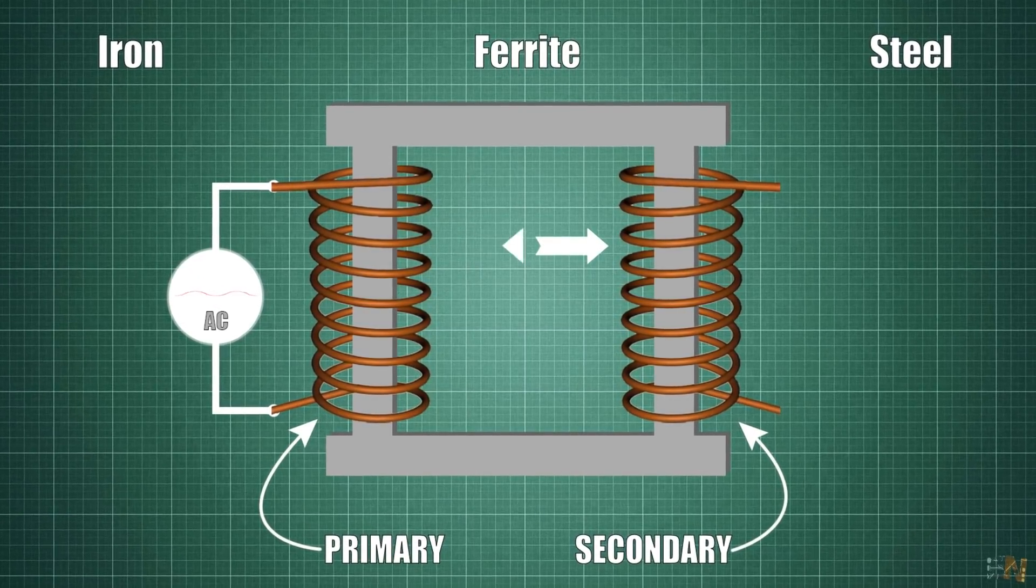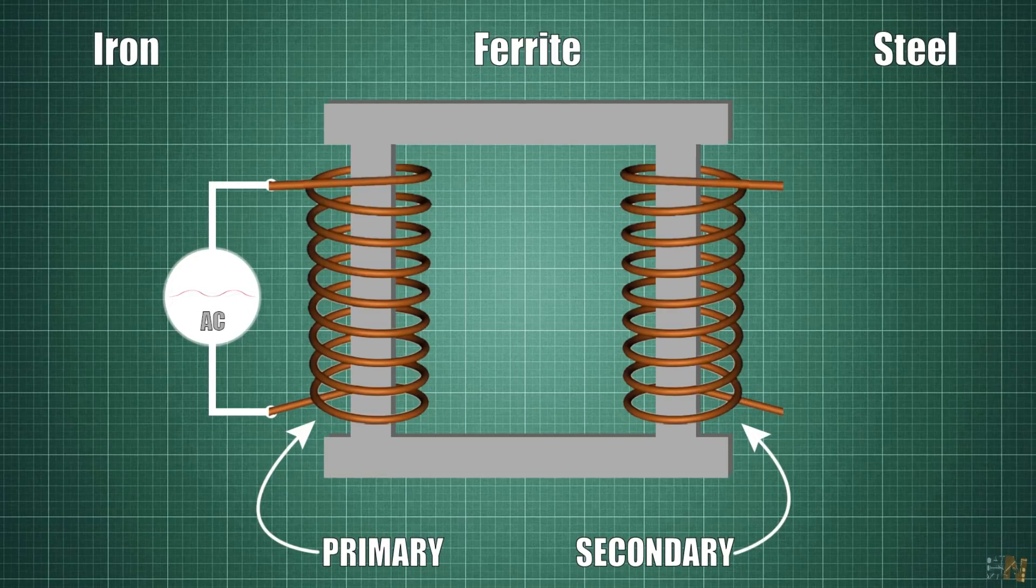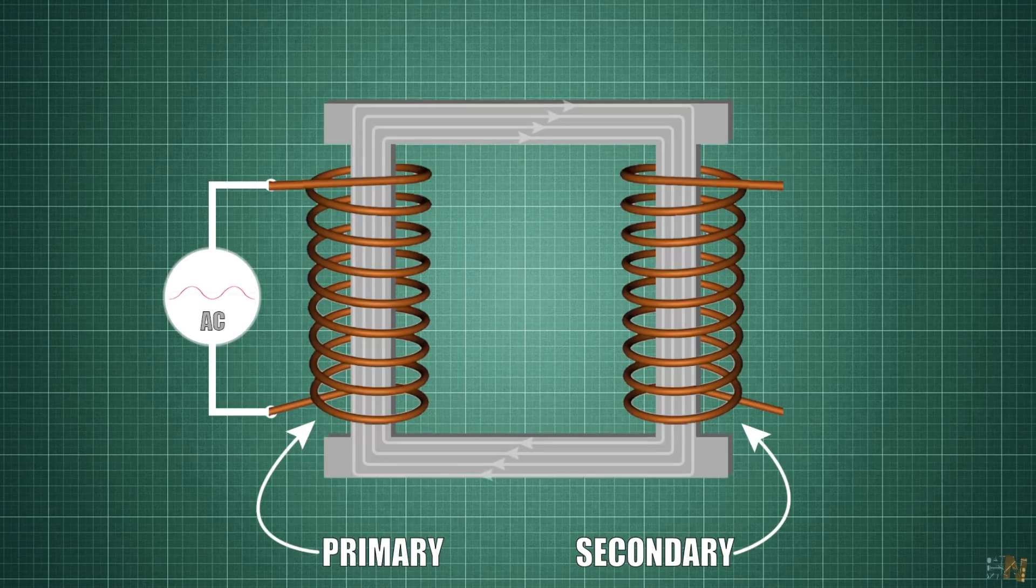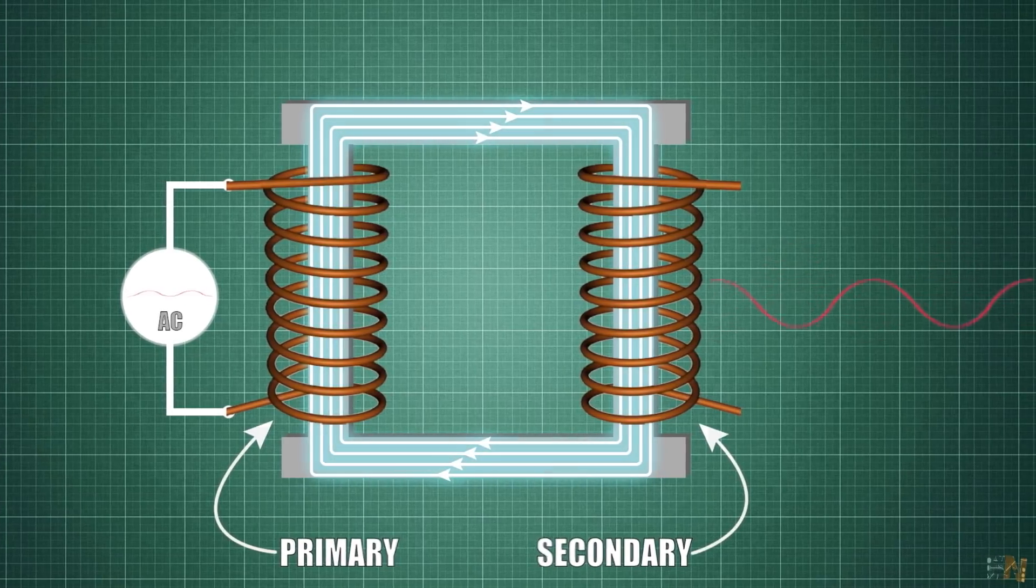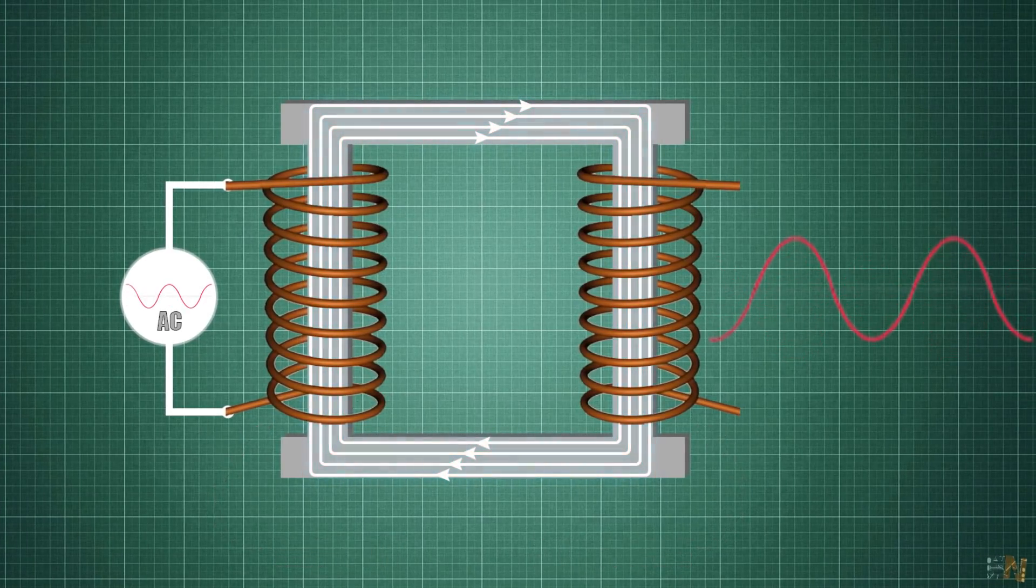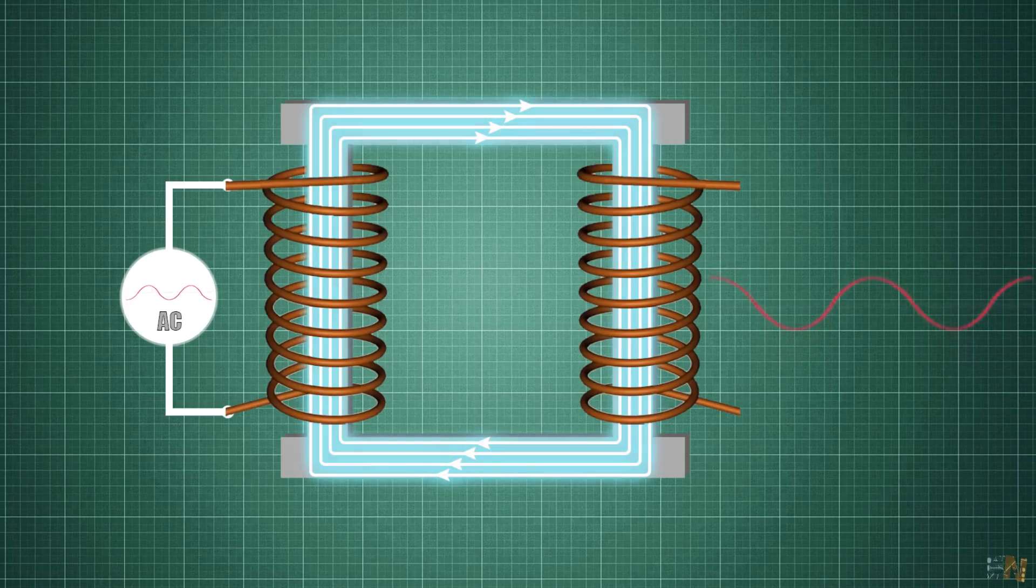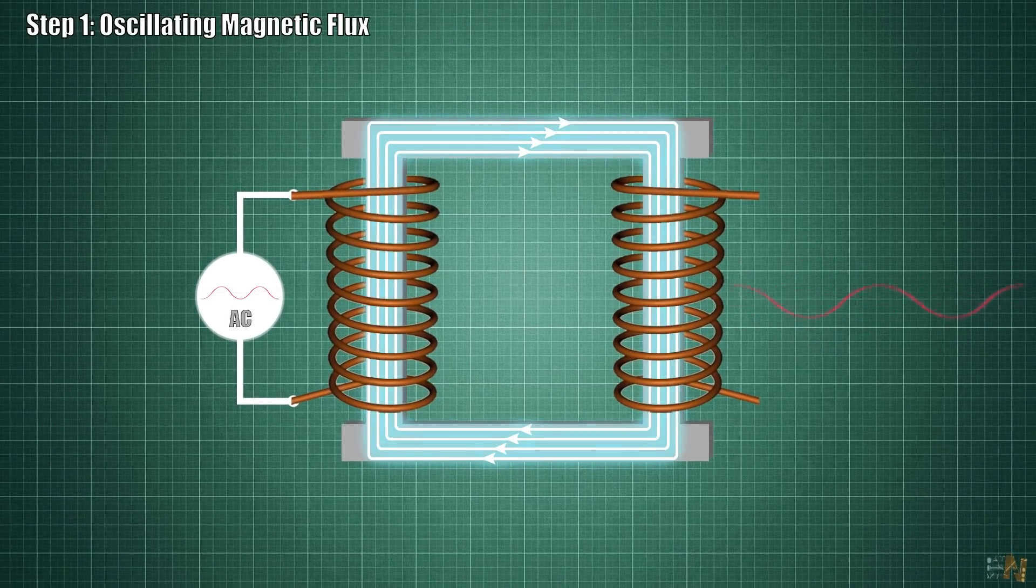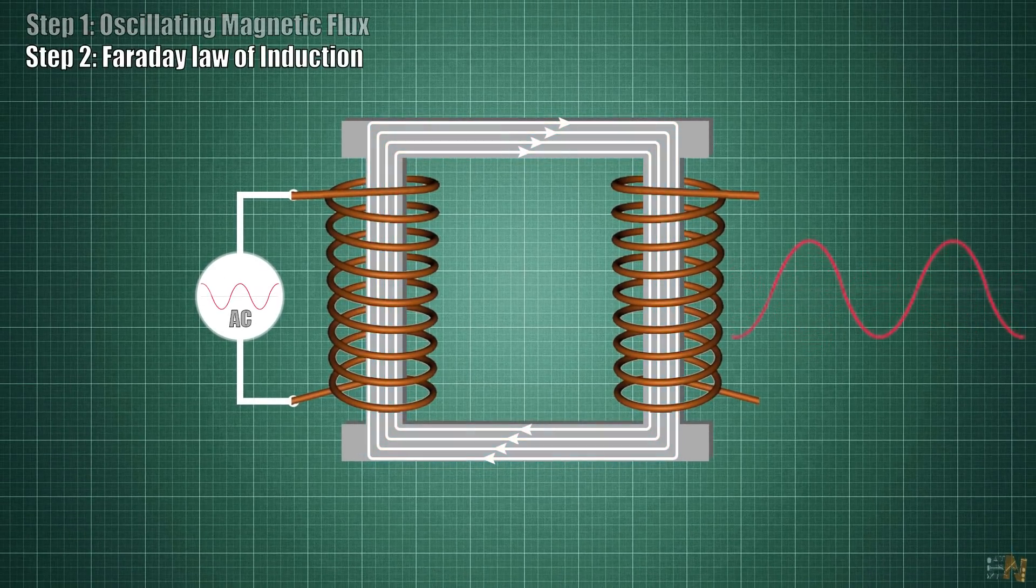Depending on that material, it will conduct the magnetic flux more or less. It will heat up more or less and have different capabilities. As soon as we place the core in between, this will guide the magnetic flux through. Almost the entire flux will pass to the other side. And I say almost because this is not 100% efficient, of course. So this will be part 3 of understanding the transformer.